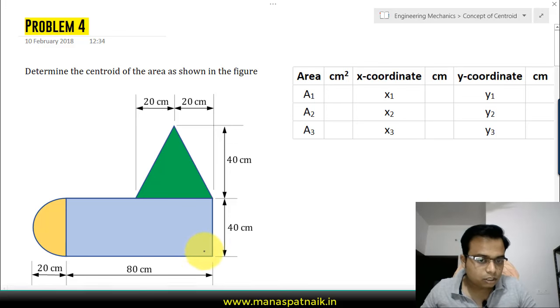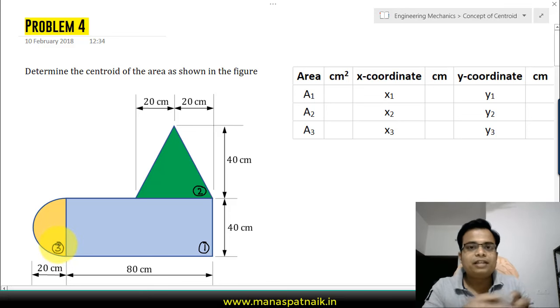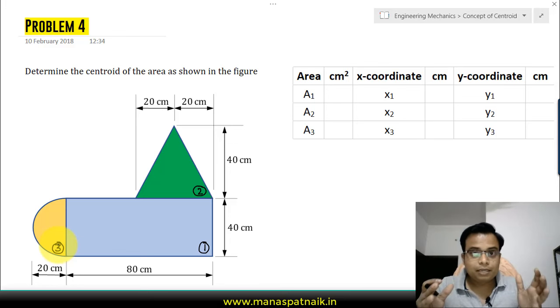We have a rectangle, let's say marked by one. This triangle over here has been marked by two, and we also have a semicircle. Now we have to find the combined centroid of all of these figures taken as a whole. Here is the approach.